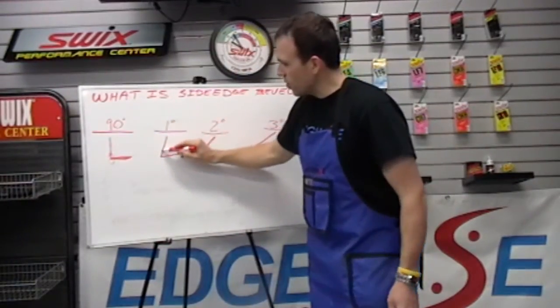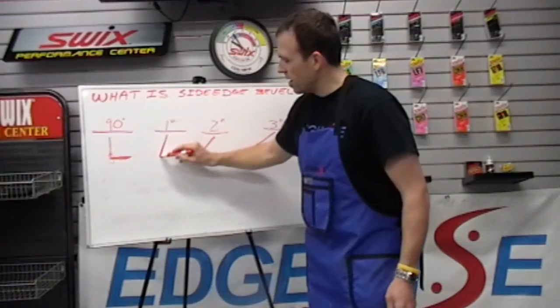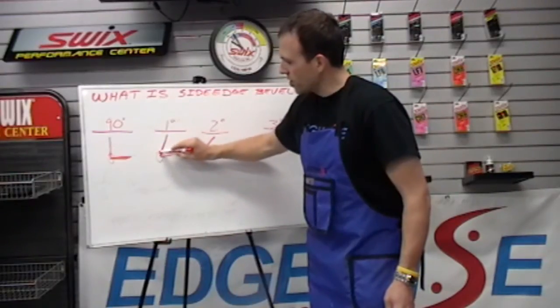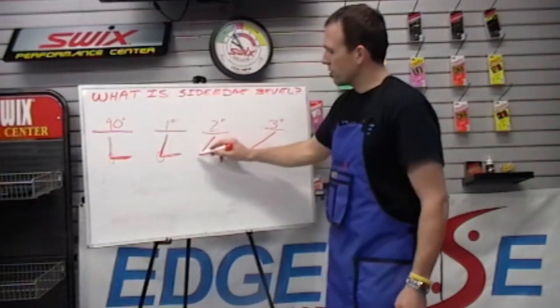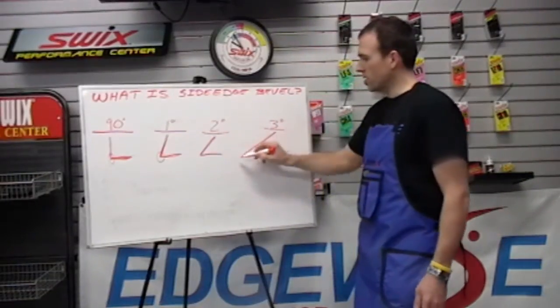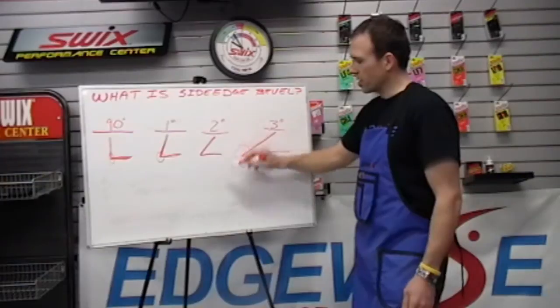1 degree is a little bit more of a taper built into the ski, a little bit sharper angle, and then on and on. So 2 degree is a little bit sharper and 3 degree is one of the most sharp angles that you could use.